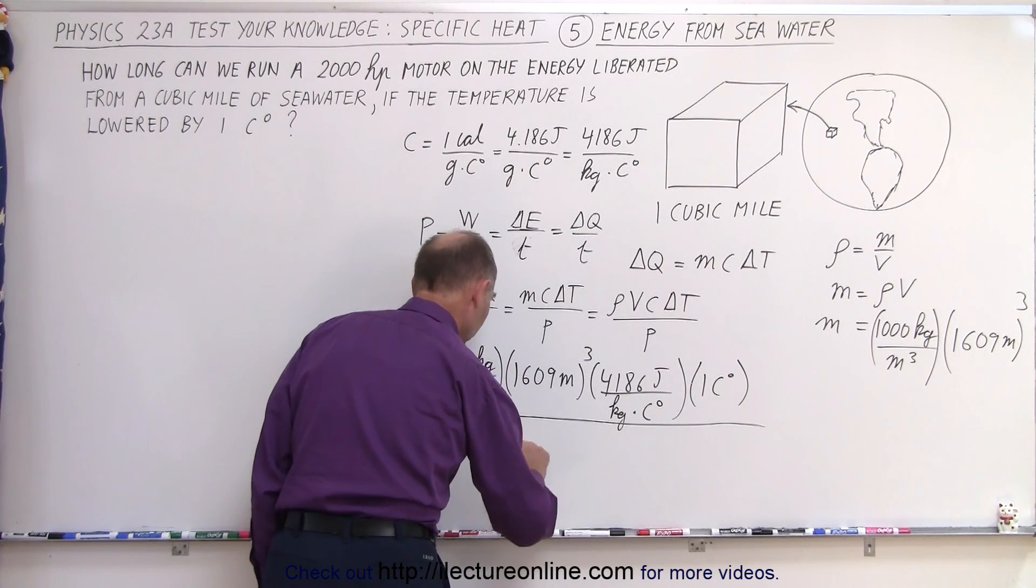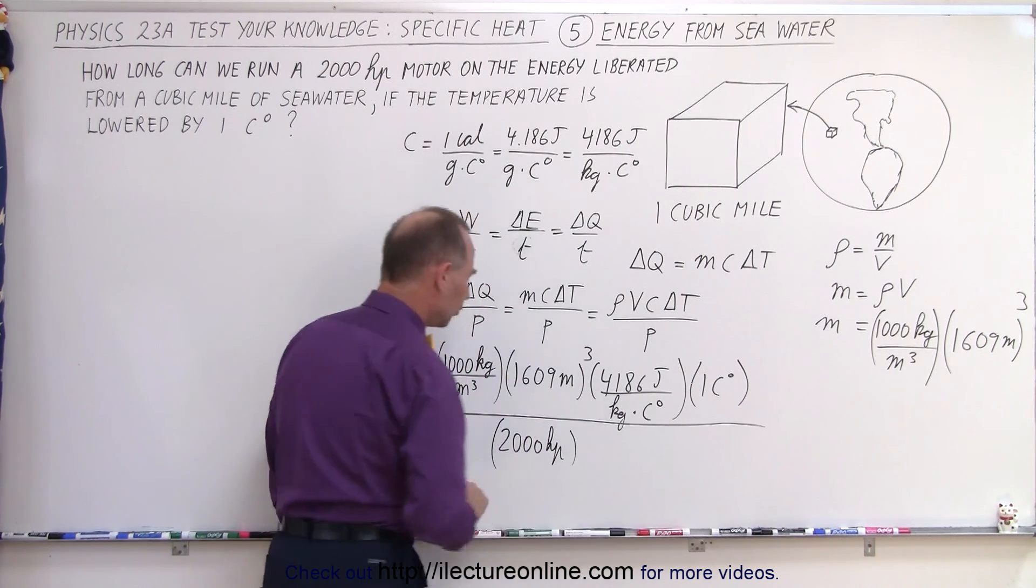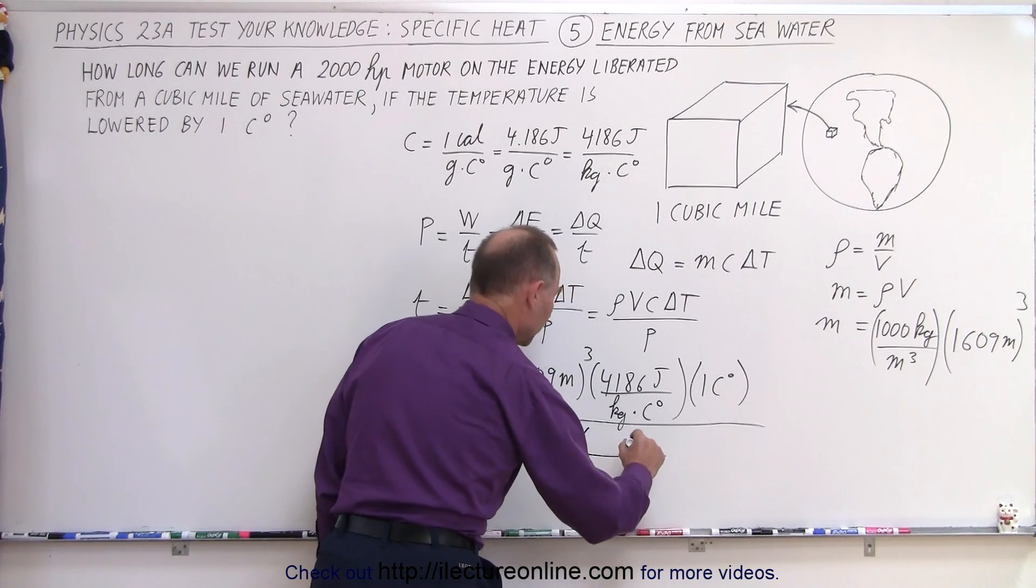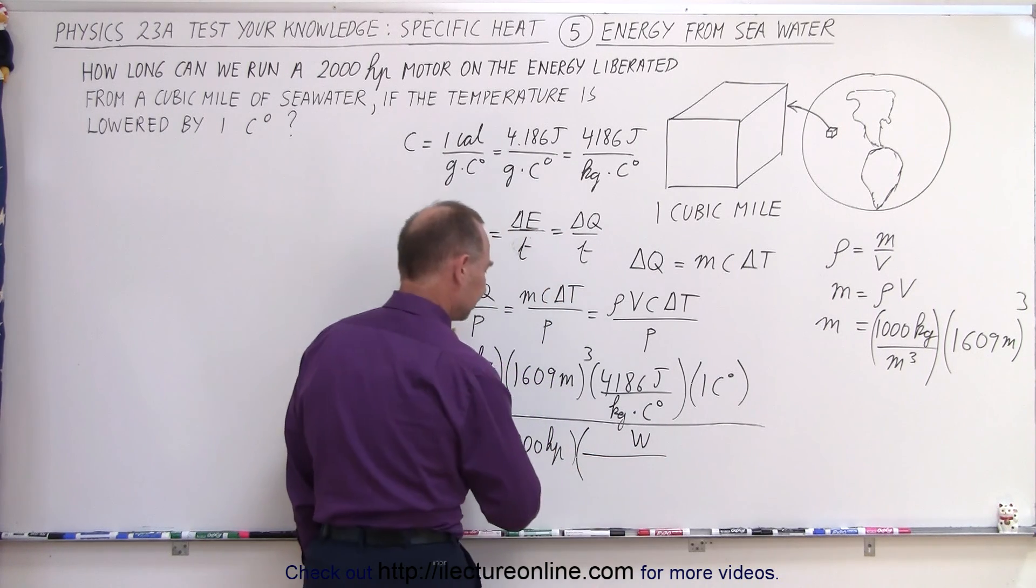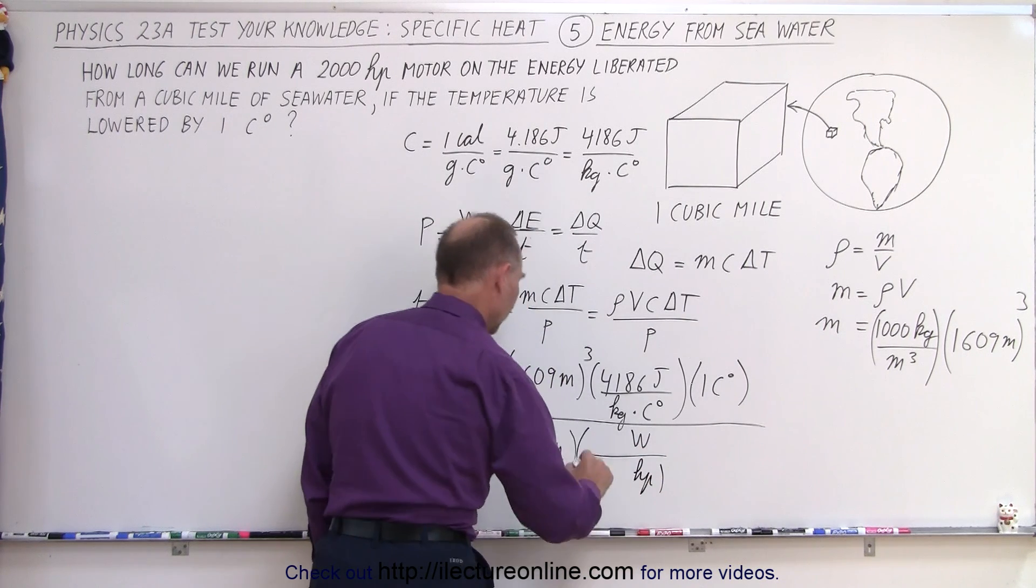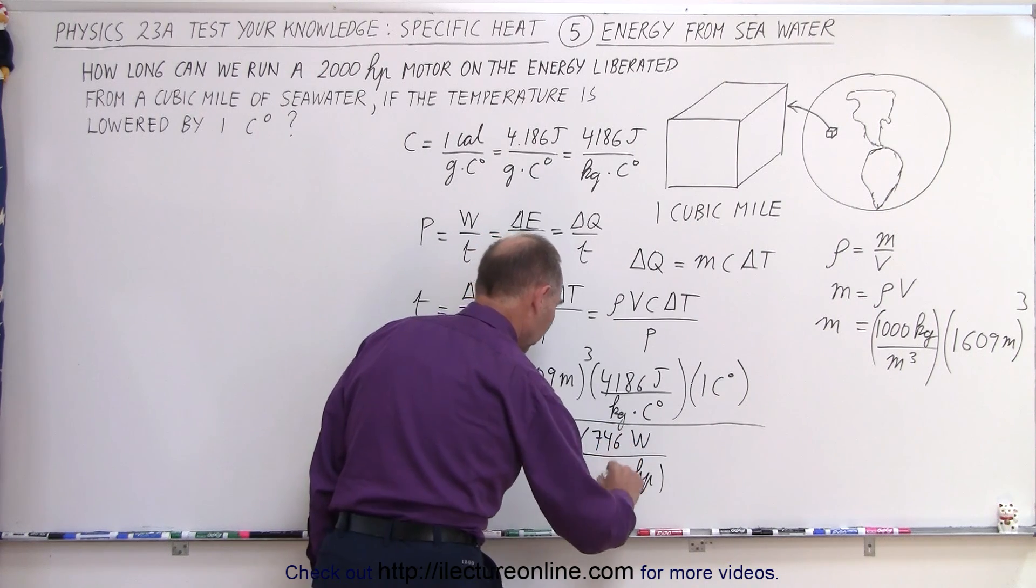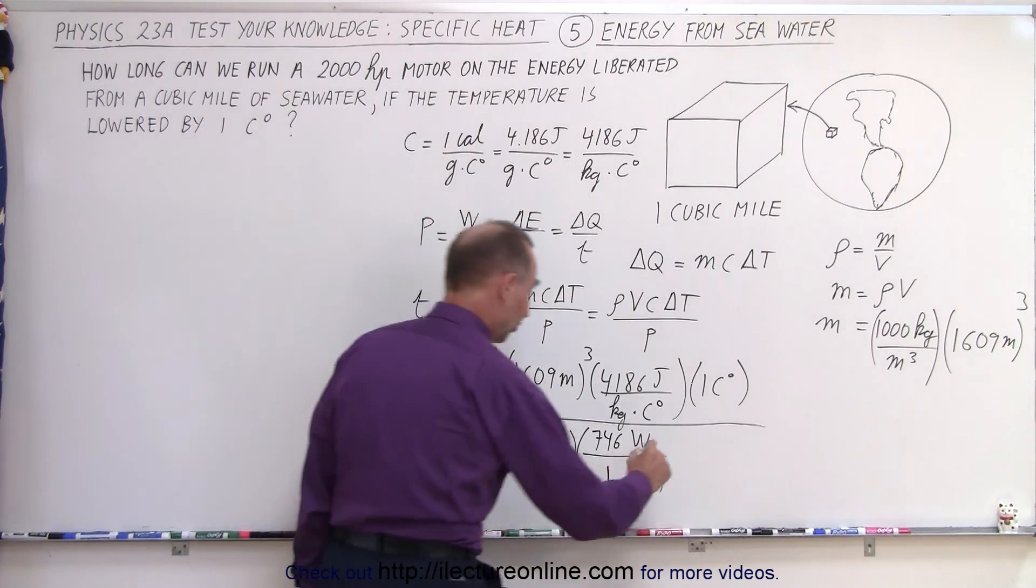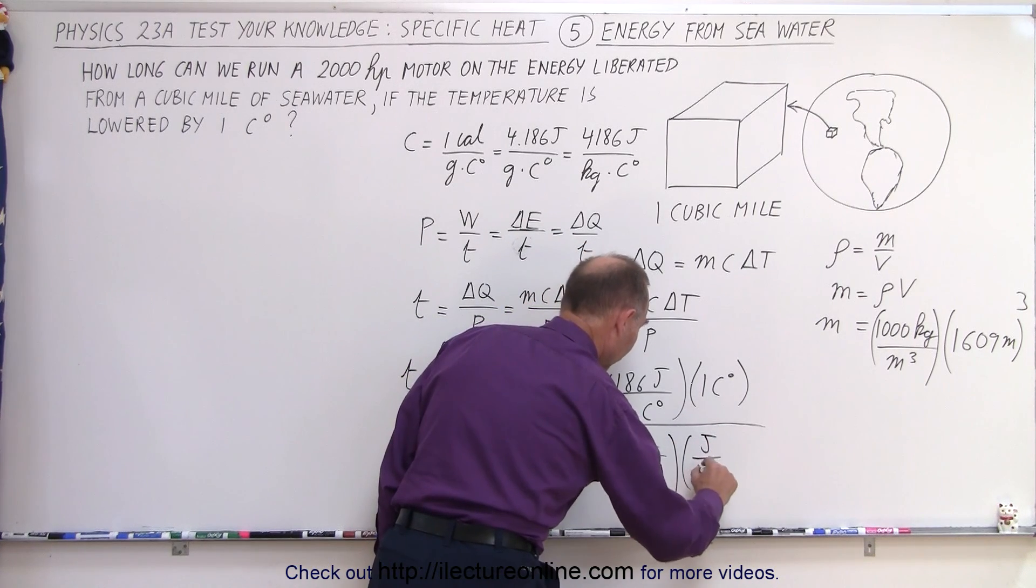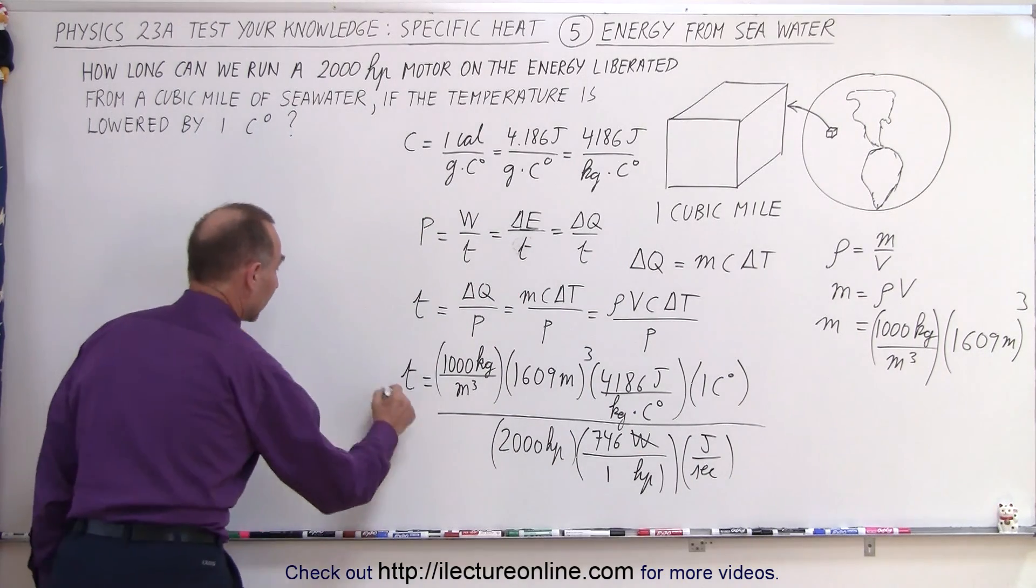And we divide the whole thing by the power of the motor which is 2,000 horsepower. Of course we have to convert horsepower to standard units and a horsepower, that would be equal to watts. That would be 746 watts equivalent to 1 horsepower. And of course a watt is a joule per second. So the watt can be converted to a joule per second. And then if 1 over second, the denominator turns into seconds in the numerator.